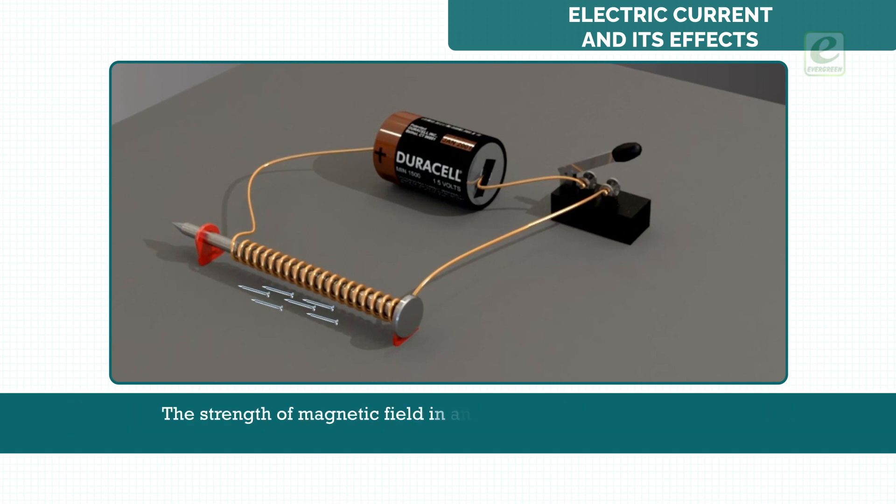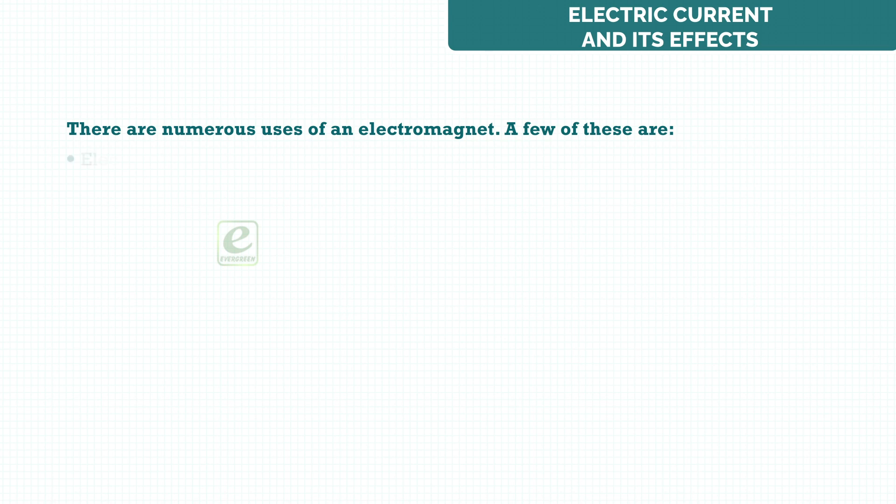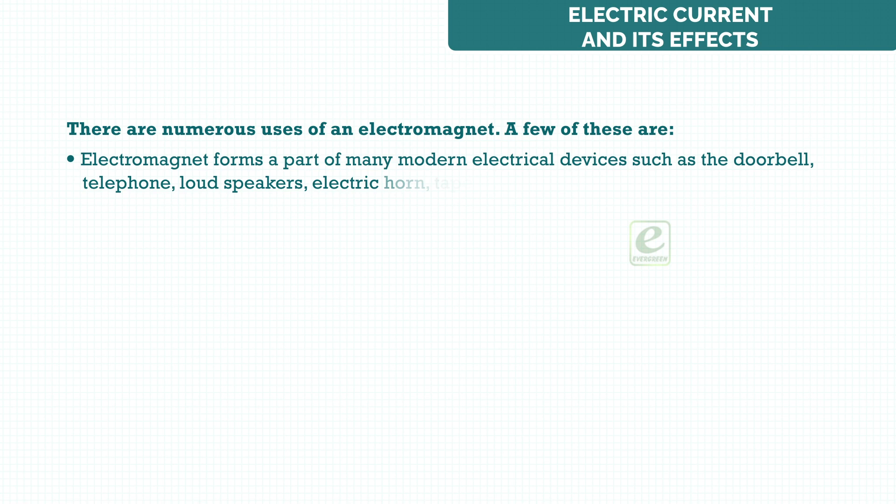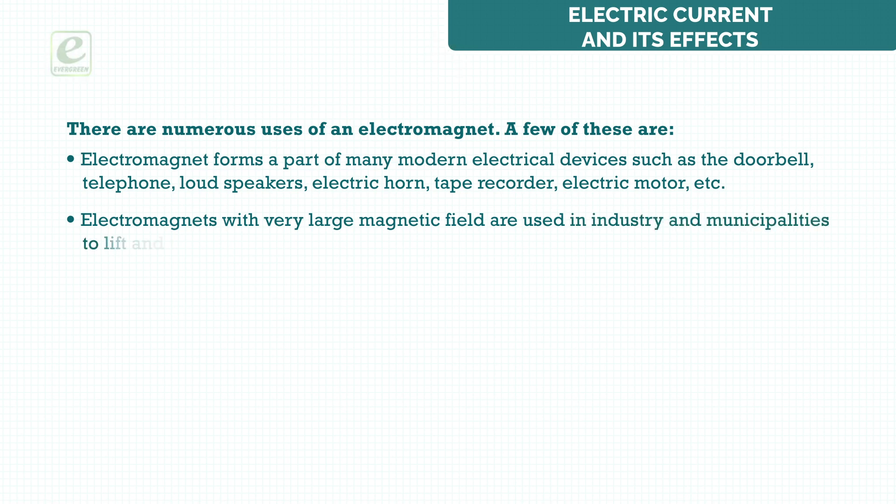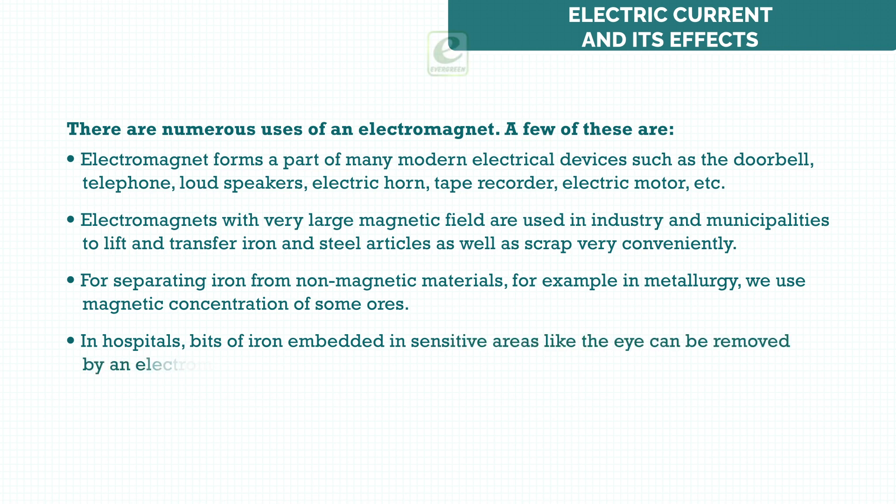The strength of magnetic field in an electromagnet depends upon number of turns of the wire and current passed through it. There are numerous uses of an electromagnet. A few of these are: electromagnet forms a part of many modern electrical devices such as the doorbell, telephone, loudspeakers, electric horn, tape recorder, electric motor, etc. Electromagnets with very large magnetic field are used in industry and municipalities to lift and transfer iron and steel articles as well as scrap very conveniently, for separating iron from non-magnetic materials, for example, in metallurgy, we use magnetic concentration of some ores. In hospitals, bits of iron embedded in sensitive areas like the eye can be removed by an electromagnet.